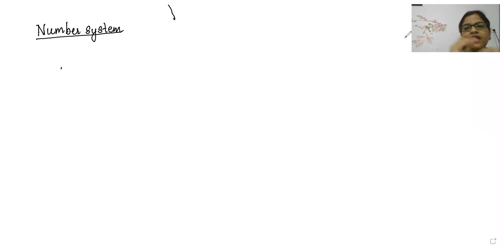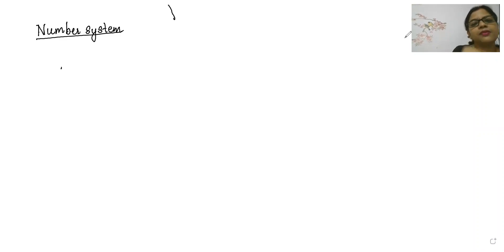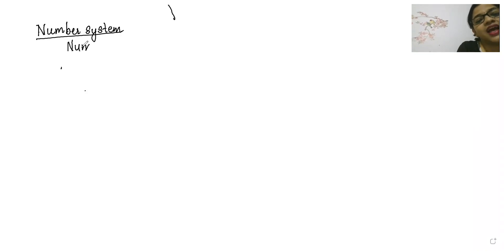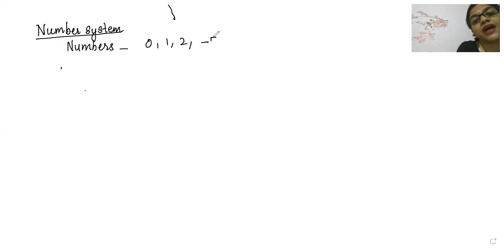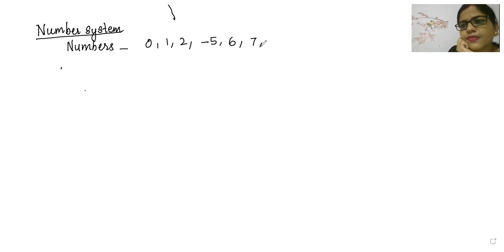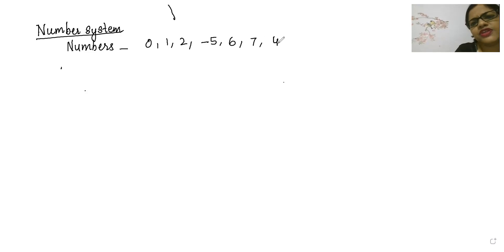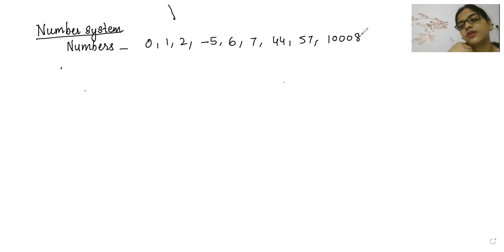I am going to start today with the beginning part of number system. What are numbers? Numbers like we already know — zero is a number, one is a number, two is a number, minus five is also a number, six, seven, 44, 57, 10008 — these are all numbers.